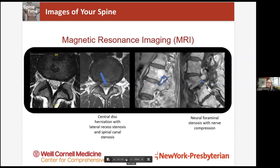Something else MRI is very good at — which you mentioned — is picking up fluid where it shouldn't be, edema, and inflammation. That's information we really can't get from an X-ray, and it's very hard to pick up on a CT scan. So MRI is really good for showing us areas of inflammation in soft tissues, showing us there's extra water or swelling where there shouldn't be. Shall we move on to CT?